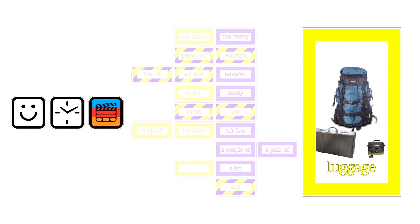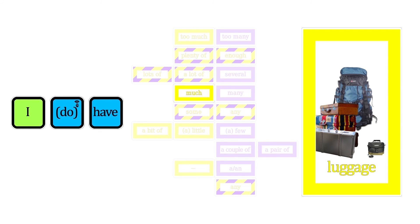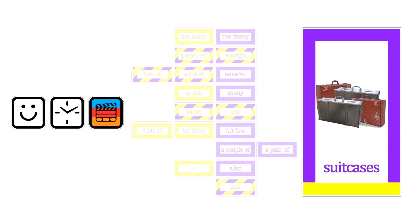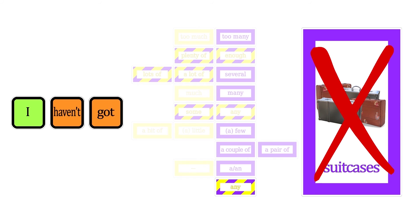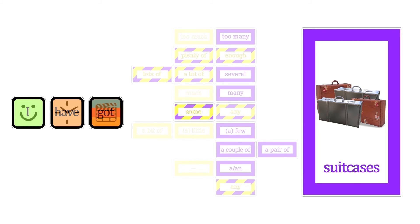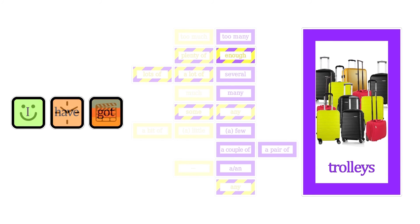Let's use luggage now, which is uncountable. I don't have any luggage. I have luggage. I have a bit of luggage, or little luggage, or a little bit of luggage. I have some luggage. I have much luggage. I have a lot of luggage, or I have lots of luggage. I have enough luggage. I have plenty of luggage. I have too much luggage. If you want to use the name of a piece of luggage, it will always be countable. I haven't got any suitcases. I have got a suitcase. I have got a couple of suitcases, or a pair of suitcases. I have got a few suitcases. I have got some suitcases. I have got many trolleys. I have got several trolleys, a lot of trolleys, lots of trolleys. I have got enough trolleys. I have got plenty of trolleys. I have got too many trolleys.